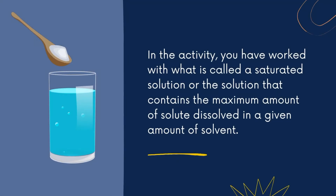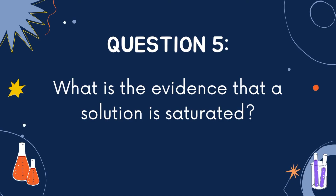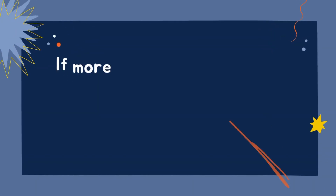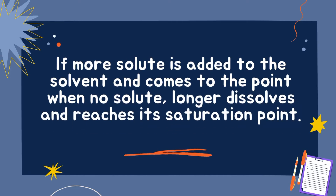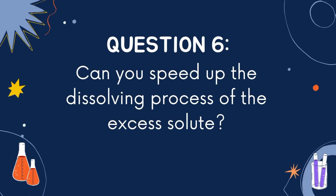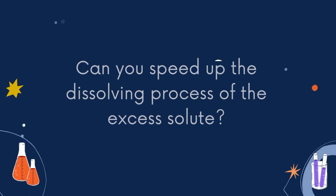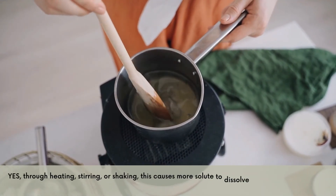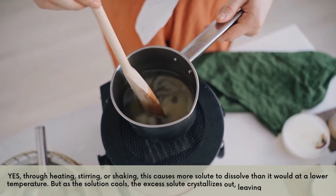In this activity, you have worked with what is called a saturated solution — the solution that contains the maximum amount of solute dissolved in a given amount of solvent. If more solute is added and reaches the point when no solute longer dissolves, the solution is already saturated. We can speed up the dissolving process through heating, stirring, or shaking.